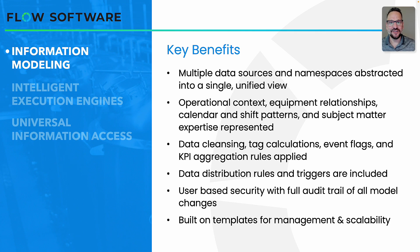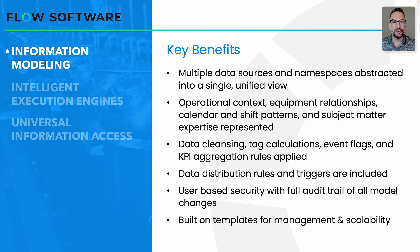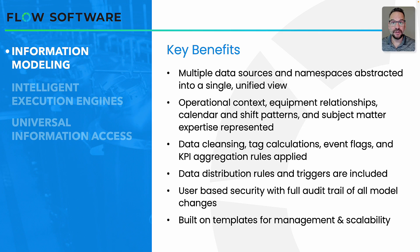From an information modeling strategy, there are some key benefits and takeaways. You're going to be able to unify multiple OT data sources — that means time series historians, SQL databases, real-time data sources, web APIs, and even manual data entry — into one unified view. That unified view brings a common namespace together, abstracting the difficult-to-understand functioning namespaces inside of a tag historian and exposing that data in a common-sense naming structure that the entire enterprise will understand. Your information model has a lot of flexibility — you could build it on a traditional ISA-95 hierarchy or build it flat to your own custom needs.